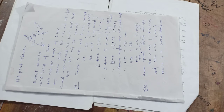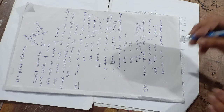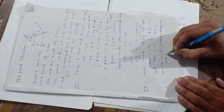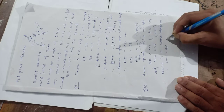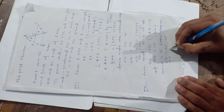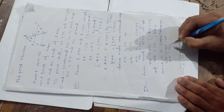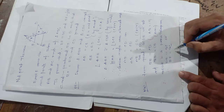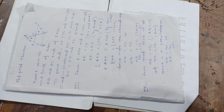We know that in a parallelogram, opposite sides are parallel. Therefore, DE is parallel to BC, and since DE and EF are the same straight line, we have got EF is parallel to BC.